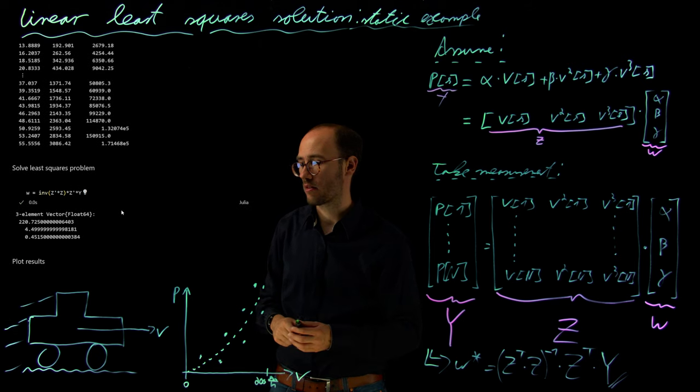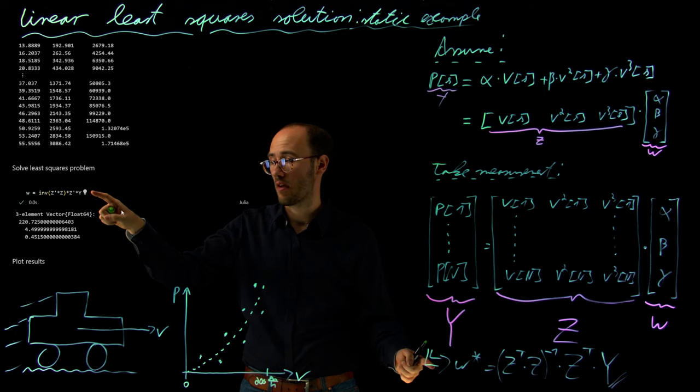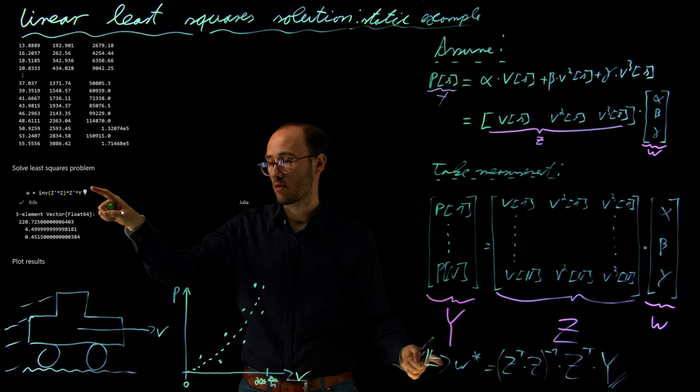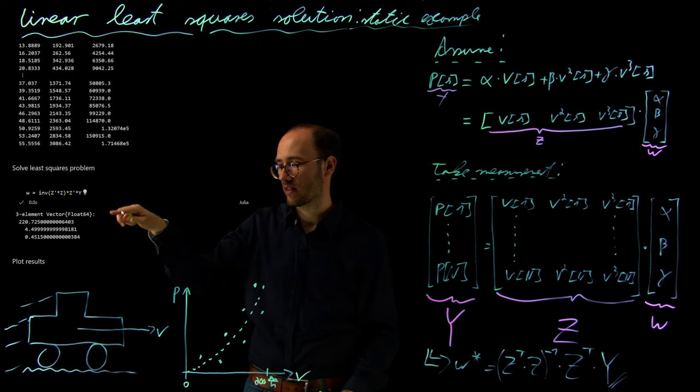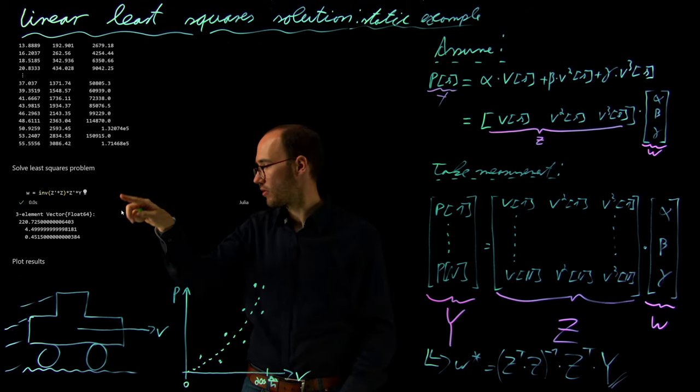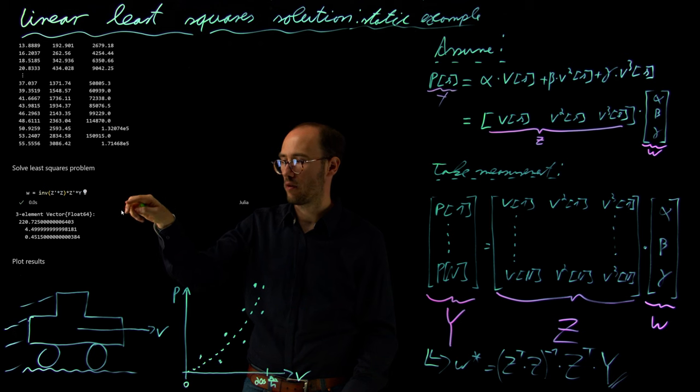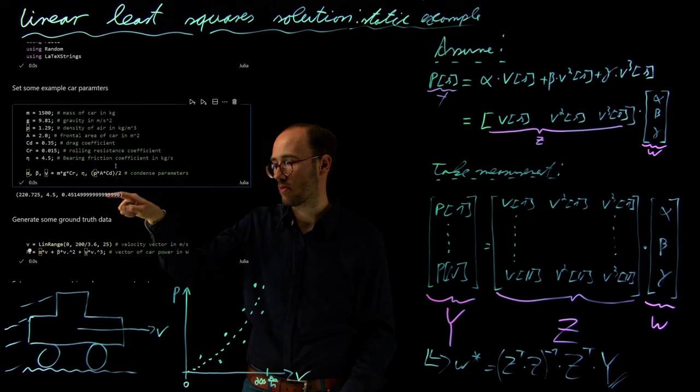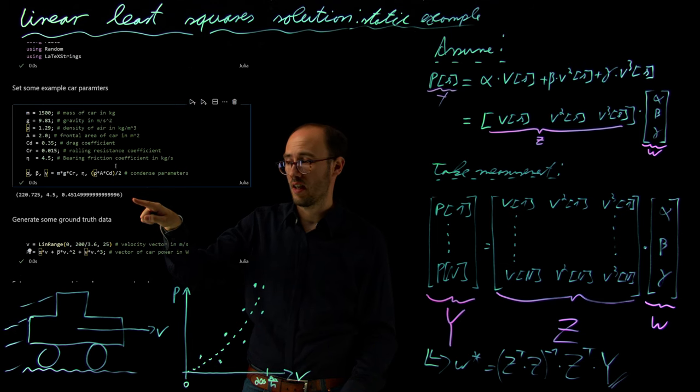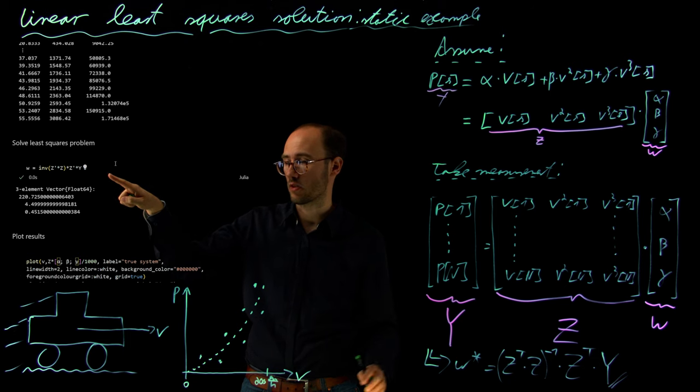And then we put basically everything together in our least square solution, which you can also see here at that point. So we have our Z_transpose times Z_inverse times Z_transpose times y, which we can see also in the Julia code. And the result of that is this parameter vector, which is basically roughly 224 and 0.45. And if we look a little bit up here in our definition of the condensed parameter vector, which would be this one. So this would be our ground truth vector.